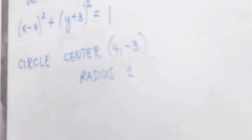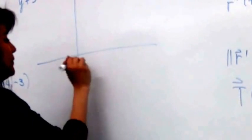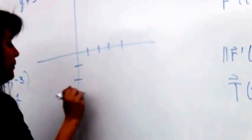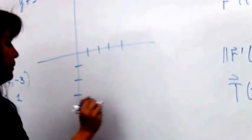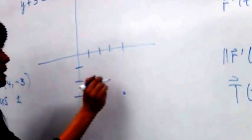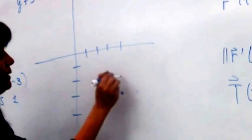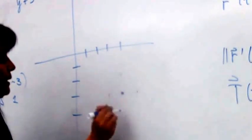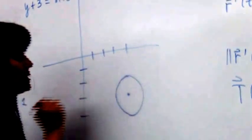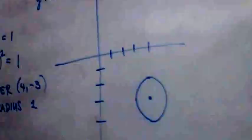So the center is at (4, −3) and the radius is 1. Everyone can graph a circle. The point I'm looking for is approximately (4.8, −2.5), which is around the upper-right part of the circle. That is the point P at pi over 6, and the position vector R of pi over 6 goes out to that point.